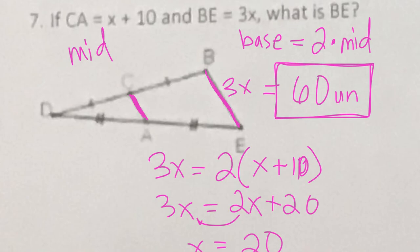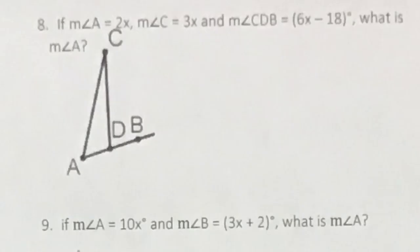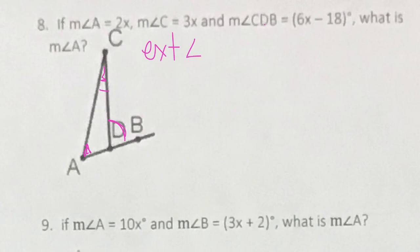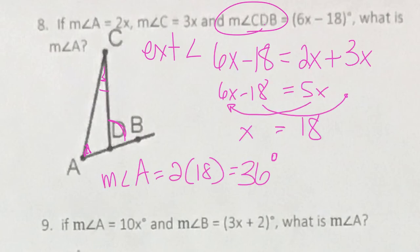Number eight: angle A is 2X, angle C is 3X, and angle CDB is out here. This is an exterior angle theorem problem because CDB is an exterior angle. Setting it up just like before — the exterior angle equals the sum of the two remote interiors — we solve and get X equals 18. Plugging in to find the measure of angle A gives 36 degrees.